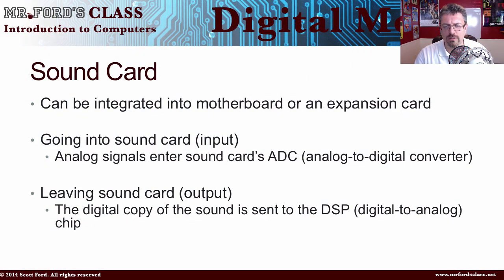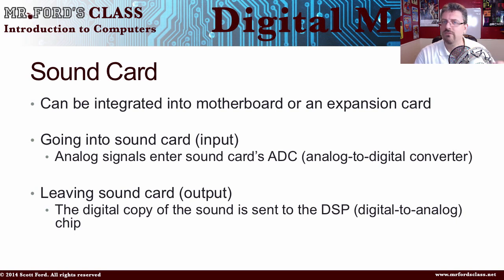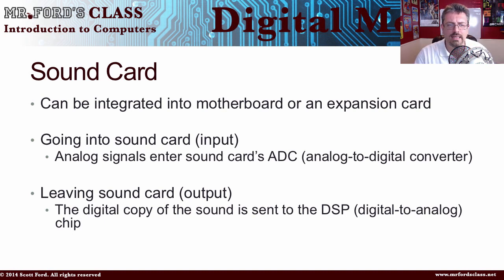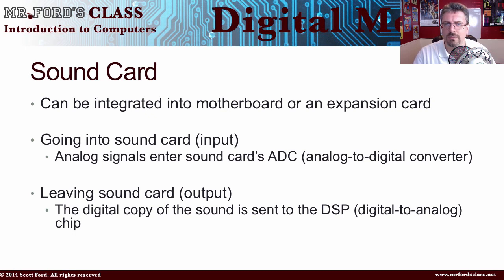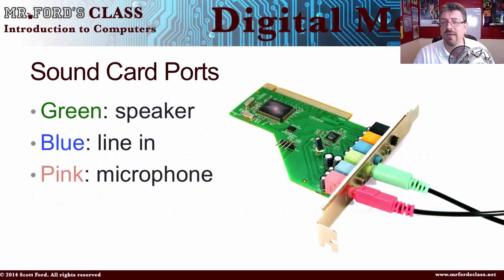A sound card is where we deal with our sound. Going into a sound card as input, analog signals enter the sound card into what we call an ADC — an analog to digital converter. The computer has to digitize information; it has to work in the digital world. Sound is a wave; it's analog. The ADC converts this analog wave into a digital signal. When it leaves the sound card, it has to go from digital back to analog, so we go through a DAC — a digital to analog chip.